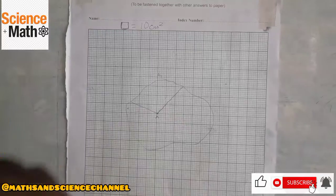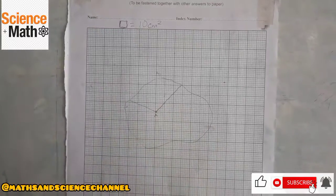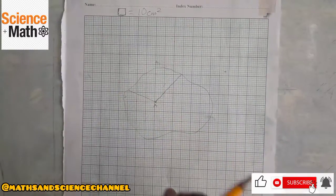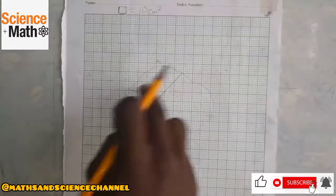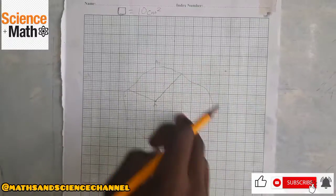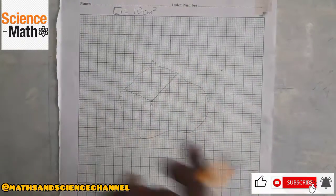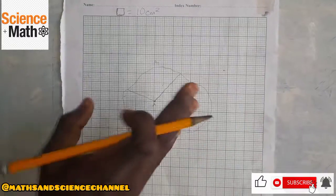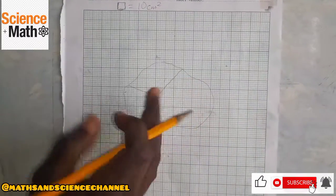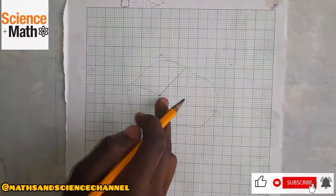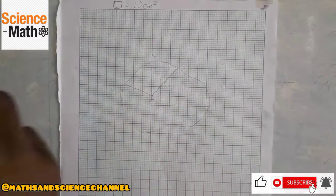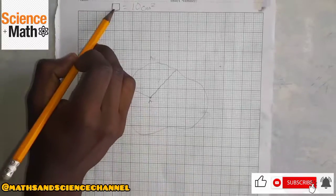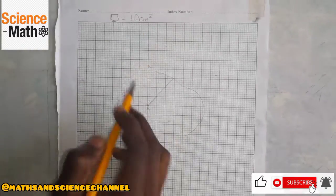After you go through drawing and joining the line with other stations, drawing a perpendicular bisector, and trying to find the area of a particular station — let's say station A — you have to get the area. If one box here is equal to 10 centimeters squared,